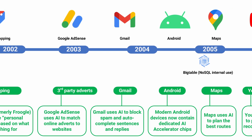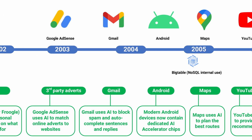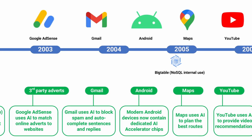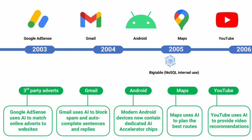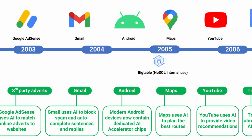A little bit later we have Gmail, and Gmail is now using AI to block spam and also to create auto-complete sentences and replies.